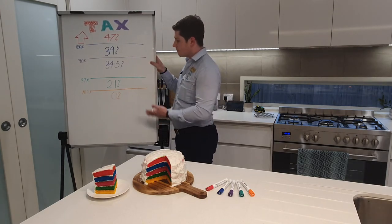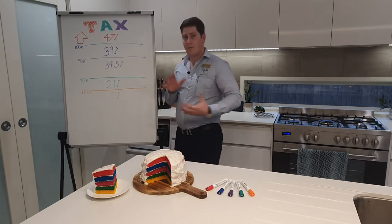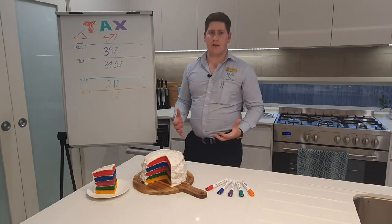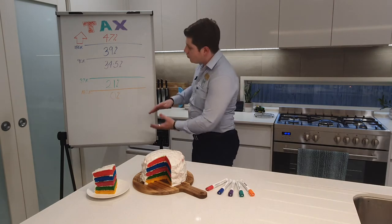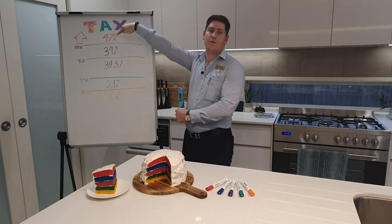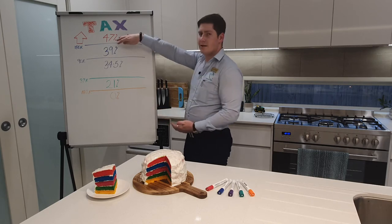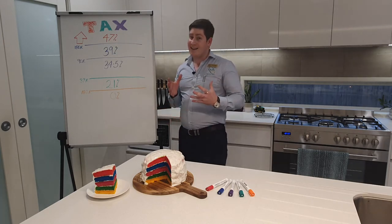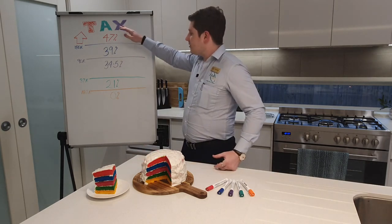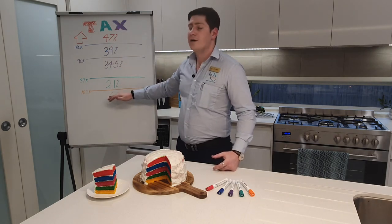When you start earning more or less — say you have a really big pay packet one week because you get a bonus or a lot of back pay — it can look like you're going to get taxed to the hilt. Because if you got paid that every week, you would be getting taxed at 47%. But the next week you don't, and so you'll get the difference back at tax time. So tax is like an onion, or in this case a beautiful rainbow cake — it works in layers. Depending on how much you earn and what bracket you're in, depends on how much you get taxed.